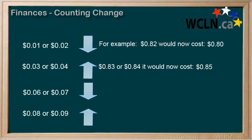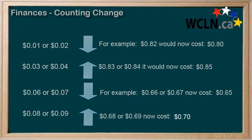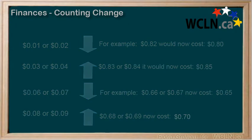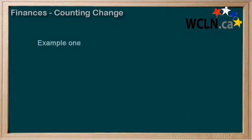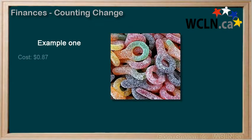For example, if something costs 66 cents or 67 cents, it would now cost 65 cents. But if it costs 68 or 69 cents, then it would now cost 70 cents. Here's an example of how to count up to find the amount of change you are owed. Let's say you buy a bag of sour keys for 87 cents, which would get rounded down to 85 cents.